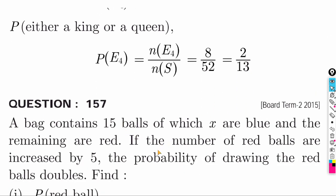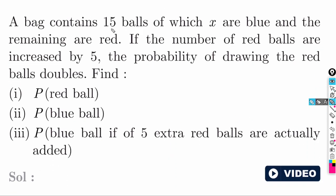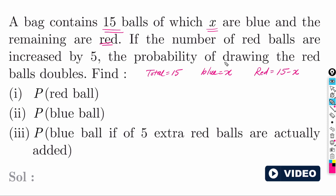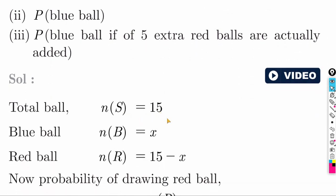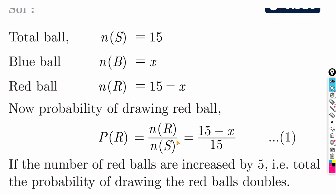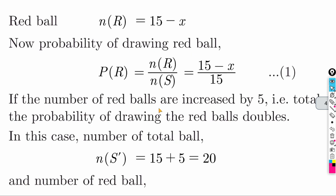A bag contains 15 bowls, of which x are blue and the remaining are red. So red bowls = 15 - x. Probability of red bowl = (15 - x) by 15. If 5 more red bowls are added, total becomes 20, red bowls become (15 - x + 5) = (20 - x). New probability of red = (20 - x) by 20. According to the question, the new probability doubles the old one.